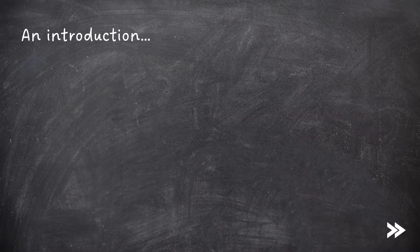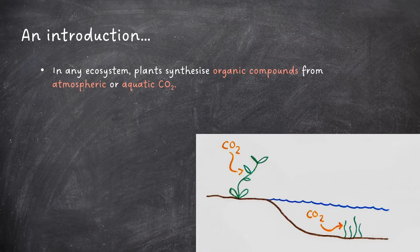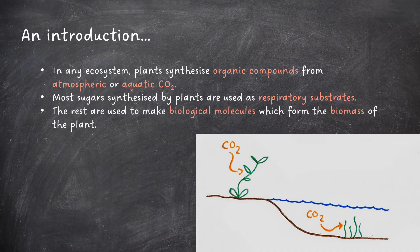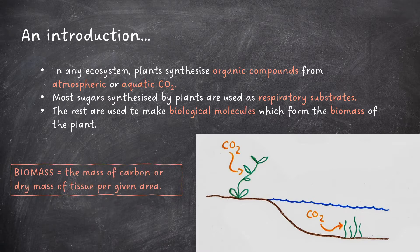In any ecosystem, plants synthesize organic compounds from atmospheric or aquatic CO2. Most sugars synthesized by plants are used as respiratory substrates. The rest are used to make biological molecules which form the biomass of the plant. Biomass is the mass of carbon or dry mass of tissue per given area.